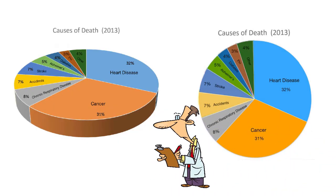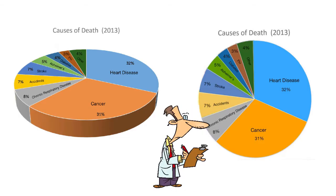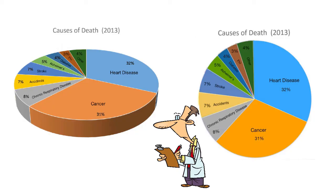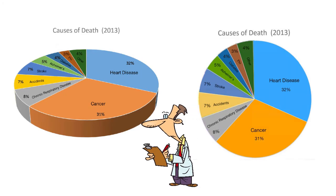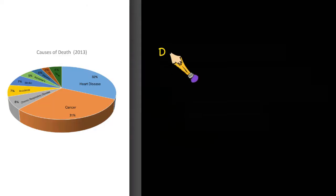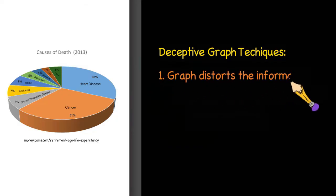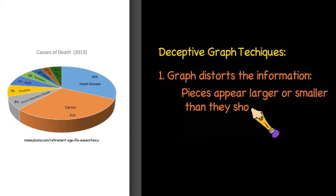If you were a scientist applying for funding to research cancer treatments, or a food company trying to downplay the significance of diabetes, which graph would you want to use? If you see a graph like this, you need to ask yourself: is there a reason the presenter would want to take advantage of this distortion? So let's make a list of deceptive graph techniques. First on the list is having the graph distorted by making the pieces look larger or smaller than they should be.